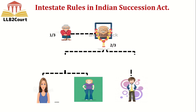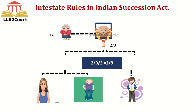If both the son and the daughter pre-deceased their father, then all the grandchildren will get the 2/3 share equally. Because they are in the same degree, they will share the property equally. So 2/3 divided by 3 equals 2/9, and each grandchild will get 2/9.